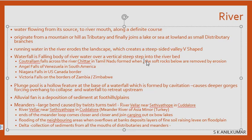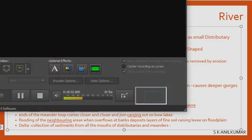The ends of the meander loop come closer together over time. This happens because of the depositing of sediments and silt inside the bends.